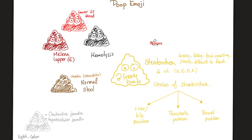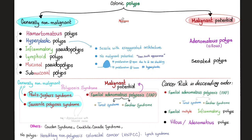Black stool is melena — this is upper GI bleed. If the stool looks bright red, this is lower GI bleed. So colon cancer presents here. If it's kind of in between, this could be coming from upstairs or downstairs.